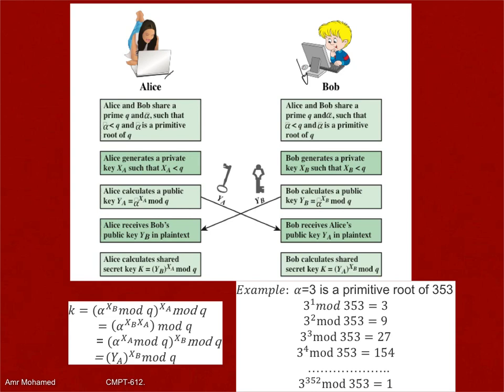Alice will generate locally XA, which is a private number known only by Alice — not even Bob. Even if somebody else has alpha and Q, they will not be able to guess XA. Then we calculate YA, which is alpha to the power XA mod Q. Because alpha is a primitive root of Q, for each value of XA we have a unique value YA.